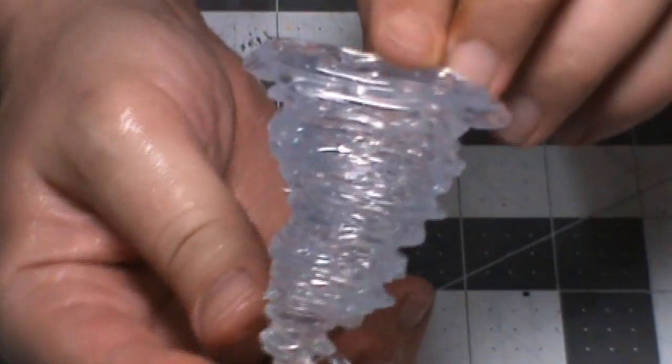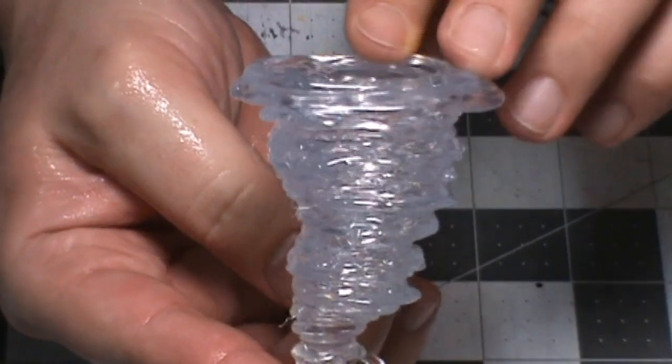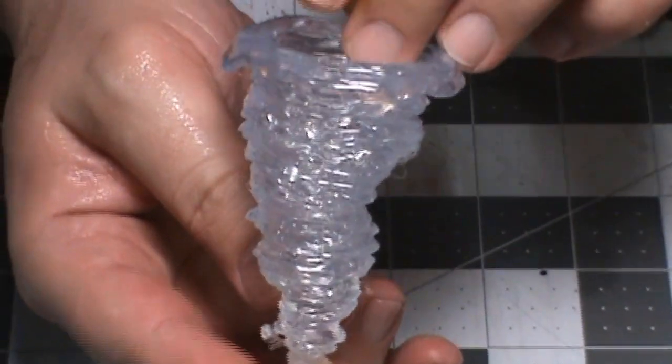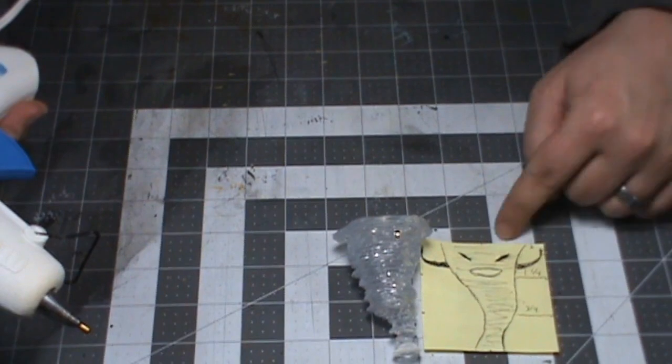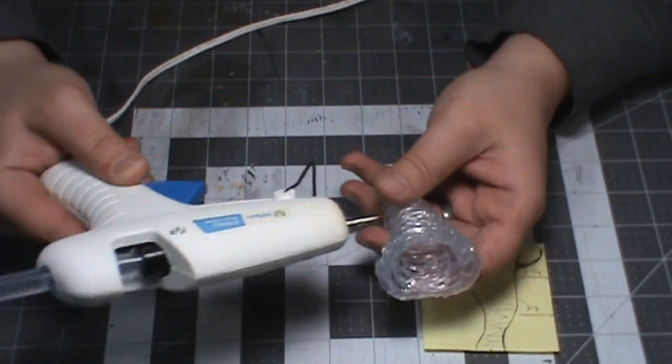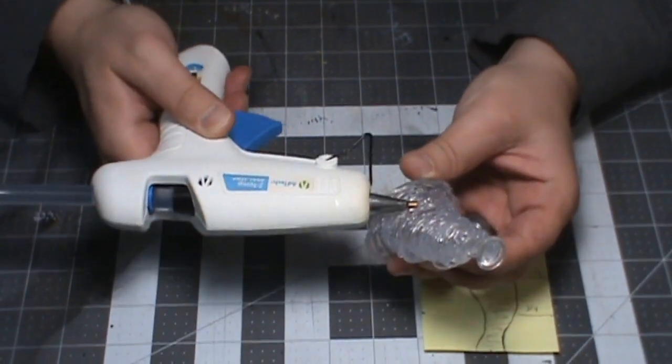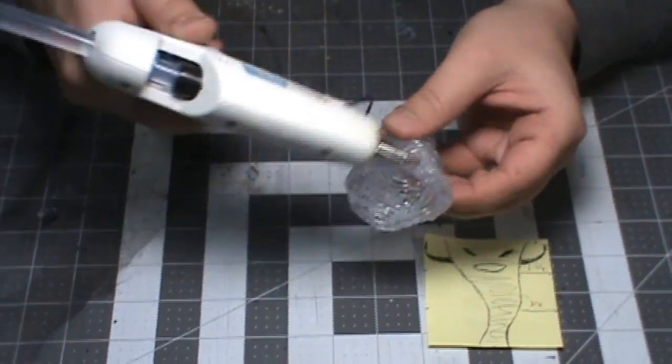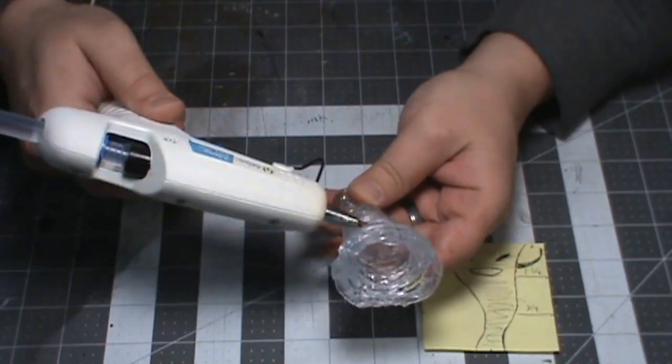You can use the tip of the glue gun to go ahead and smooth out any kind of weird stuff if it's blobbed over somewhere, melt off any strings, that kind of thing. To make the face I'm just using the hot tip of the glue gun and mashing it in at the angle I want the eyes and then kind of drawing a little squiggly for the mouth. It's going to be really hard to see in the video until I get the paint on it.